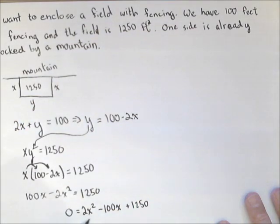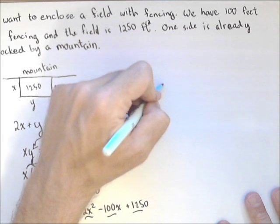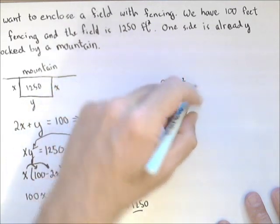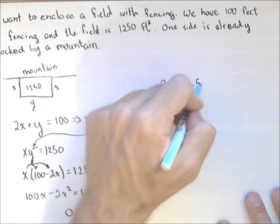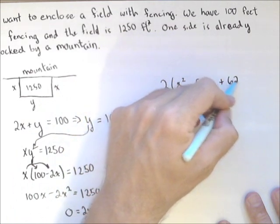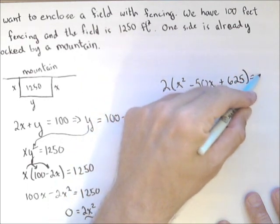And notice, all of these are even. So, I can factor a 2 out. It might make this thing easier to deal with. So, 2 times x squared minus 50x plus 625 equals zero.